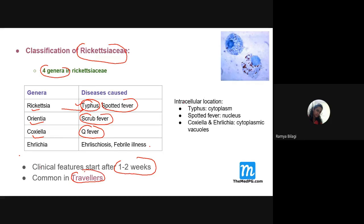Q fever is caused by Coxiella burnetii. It is not transmitted by fleas, lice, ticks, or mites — it is transmitted by inhalation of dust, drinking contaminated milk or milk products, or by aerosols. Rickettsial bacteria have group-specific, species-specific, and alkaline-stable polysaccharide antigens. The alkaline-stable polysaccharide antigen is important because it is used to demonstrate the Weil-Felix reaction. There are four genera: Rickettsia, Orientia, Coxiella, and Ehrlichia.